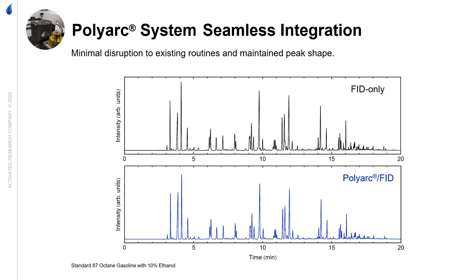The PolyArch reactor is able to seamlessly integrate into your GC-FID system. You can see in these two chromatograms that the separation for FID versus PolyArch FID are about the same, so there is minimal disruption when the reactor is added.